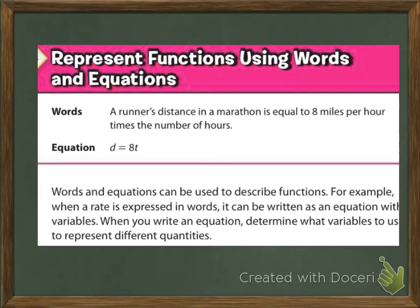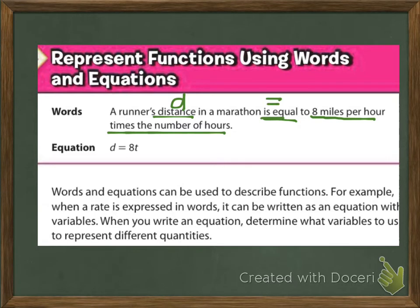Represent functions using words and equations. A runner's distance in a marathon is equal to 8 miles per hour times the number of hours, so D equals 8 miles times the number of hours, which they use as T. Words and equations can be used to describe functions — when a rate is expressed in words it can be written as an equation with variables. Determine what variables to use to represent different quantities.